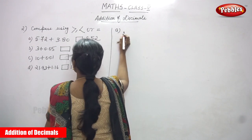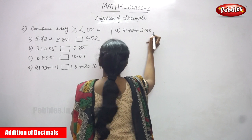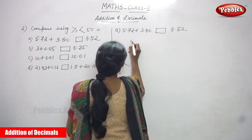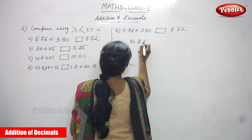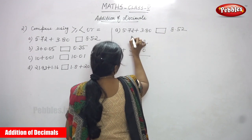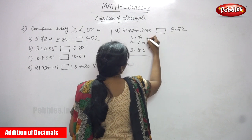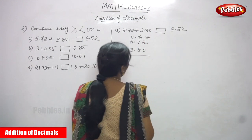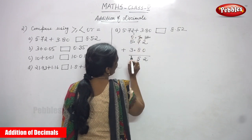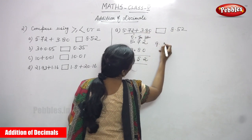Question A: compare 5.72 plus 3.80 with the box, then 8.52. So 5.72 plus 3.80 — this is the ones place, the tens place (tth), and hundreds place (hts). Start with the decimal: 2 plus 0 is 2, 7 plus 8 is 15, write 5 carry 1. Then ones place: 5 plus 1 is 6, 6 plus 3 is 9. The answer is 9.52.